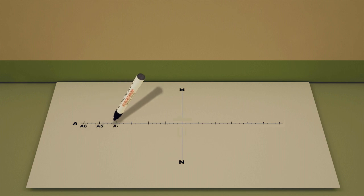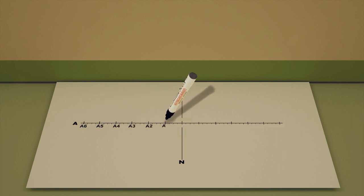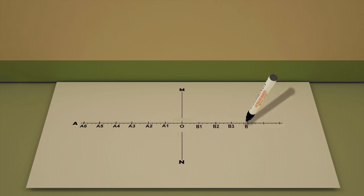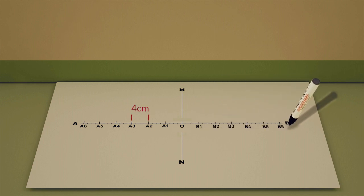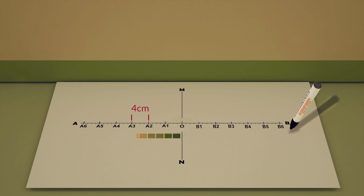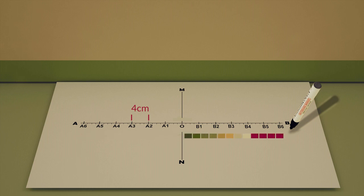Let them intersect at the point O. Divide line AB into equal divisions of four centimeters each on both sides of the point O. Mark the points to the left from O as A1 to A5, and those on the right as B1 to B5.